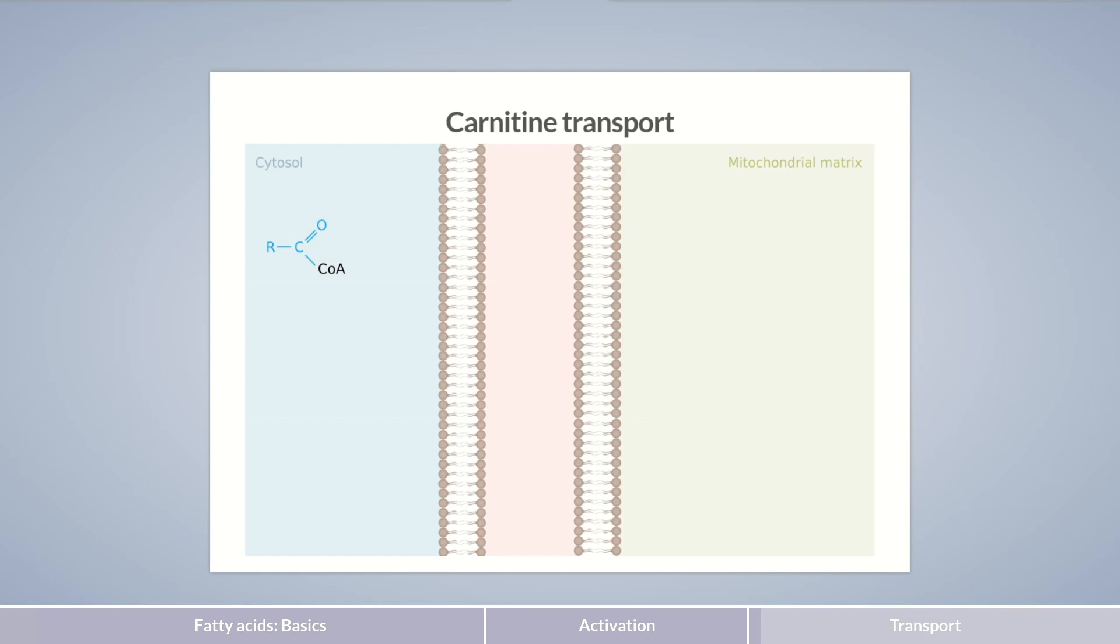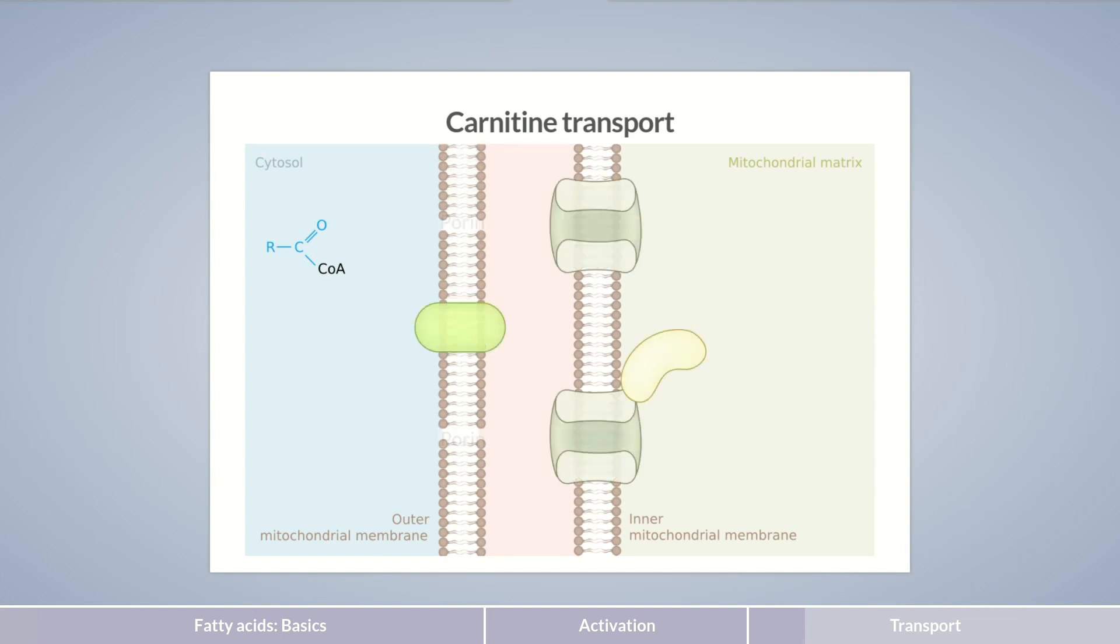Since fatty acids are activated in the cytosol, the acyl-CoA formed needs to be transported into the mitochondrial matrix for degradation. The outer mitochondrial membrane is highly permeable through porins, whereas the inner membrane isn't. Therefore, acyl-CoA needs to be translocated across the inner membrane by a transport system, termed the carnitine shuttle.